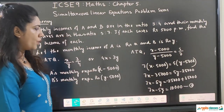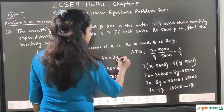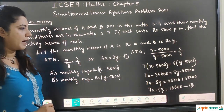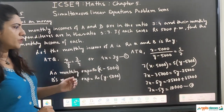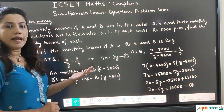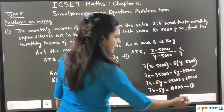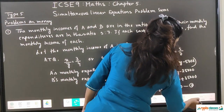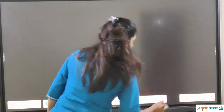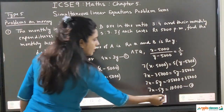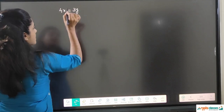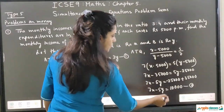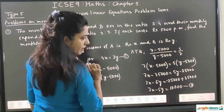So equation 1 is 4X equals 3Y, and equation 2 is 7X minus 5Y equals 10,000. We have to solve these two equations — we can use any method: substitution, elimination, or cross multiplication. From equation 1, X equals 3Y upon 4. Now I will put this value into equation 2.